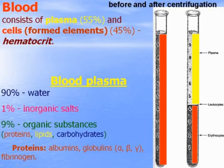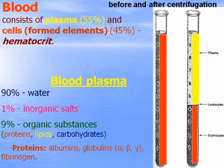Blood plasma consists of water, inorganic and organic substances. Organic substances consist of proteins, lipids, and carbohydrates. The main proteins are albumins, globulins, and fibrinogen. The blood plasma you will study in detail during the course of biochemistry.